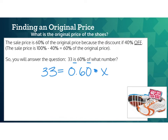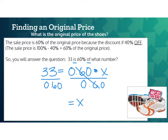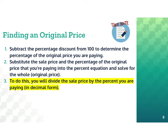To figure out what x is, we divide both sides by 0.60. 33 divided by 0.6 gives us $55. So the original price of the shoes before the sale was $55. Take a minute to read through the notes on how to find an original price and add anything helpful to your notes.